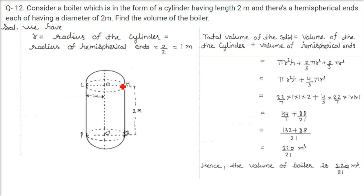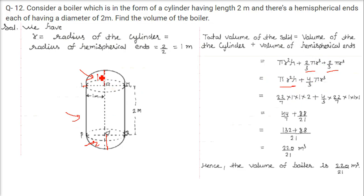A boiler is a cylinder of length 2 meters with a hemispherical end on each side, each of diameter 2 meters. The radius is 1. The combined volume of the two hemispheres equals (4/3)πr³. The volume of the cylindrical part is πr²h with r = 1 and h = 2. Total volume of the boiler is 220/21.